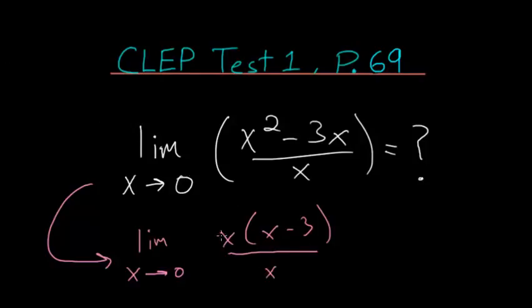And now canceling the x in the numerator with that in the denominator, we're left with the limit as x approaches 0 of x minus 3. And then evaluating this limit, we could just plug 0 in for x, and now we're left with negative 3.